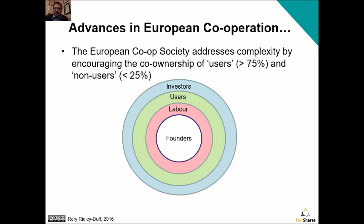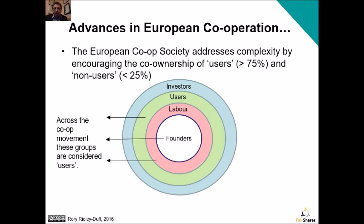In 2007 the European cooperative movement lobbied the EU Commission and the idea of a European cooperative society was introduced. This brought together some of the practices within the movement to combine ownership by users — over 75 percent — and non-users who would hold less than 25 percent of the ownership of a co-op. Across the co-op movement, what we've been calling founders, labour and users would all be considered users in European cooperative law.